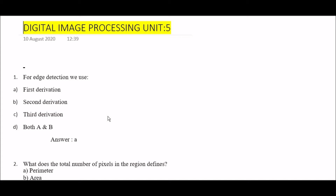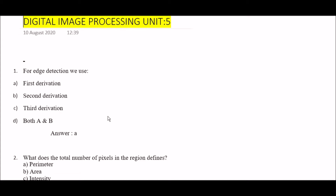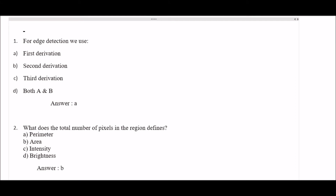Let's begin. The first question is: for edge detection, we use — option A: first derivative, option B: second derivative, option C: third derivative, option D: both A and B. The right answer is option A, first derivative. So for edge detection, we use the first derivative.